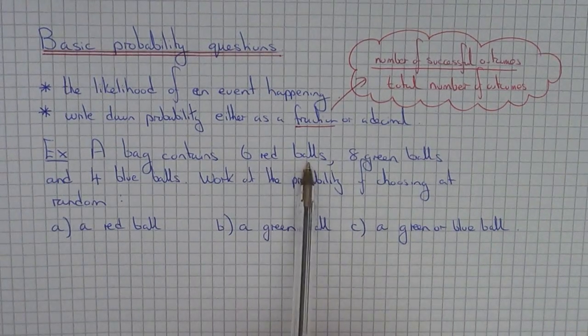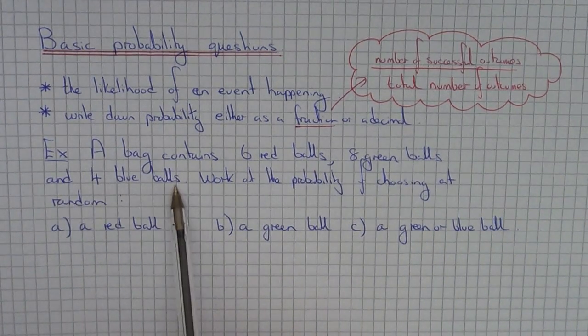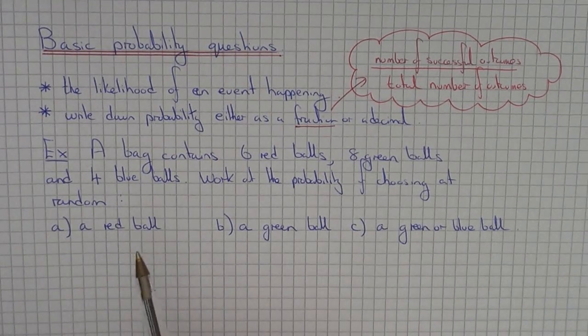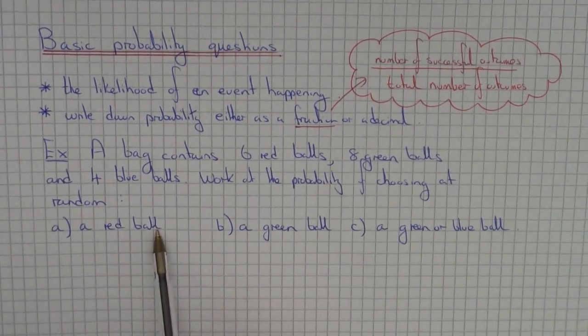A bag contains 6 red balls, 8 green balls, and 4 blue balls. We've got to work out the probability of choosing at random from the bag of balls a red ball.